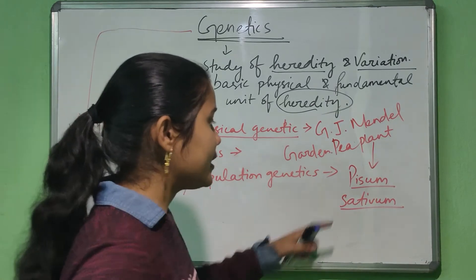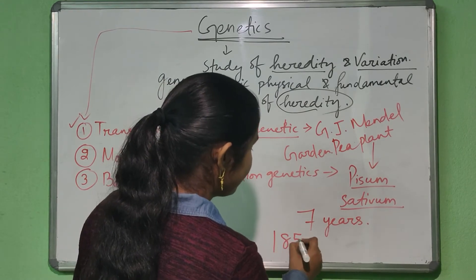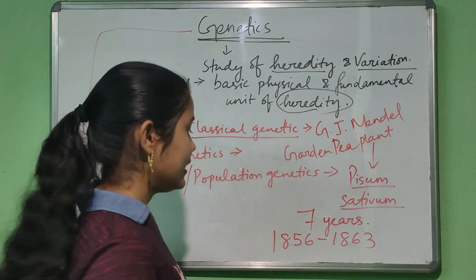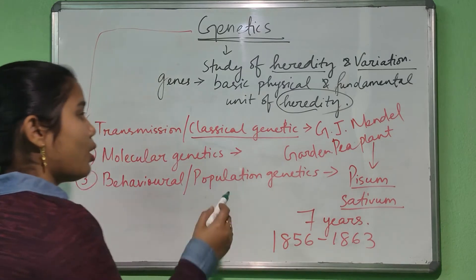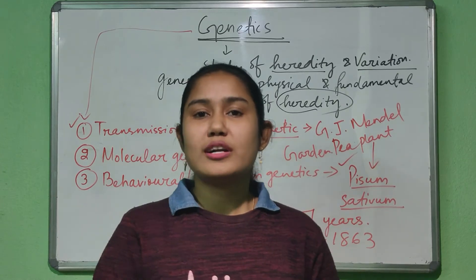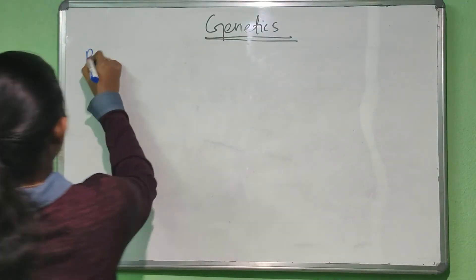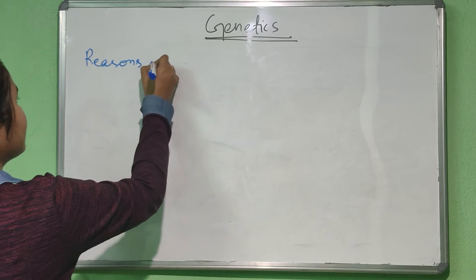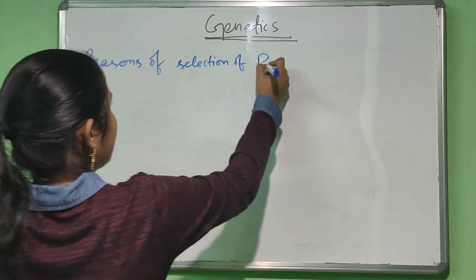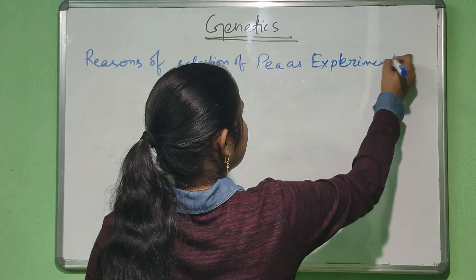For his experiment, he took seven years — starting from 1856 to 1863. Now, why did Mendel choose Pisum sativum? It is an important question. So let's learn about the reasons for selection of pea as experimental material. There are five reasons why Mendel chose pea plant as his experimental material.